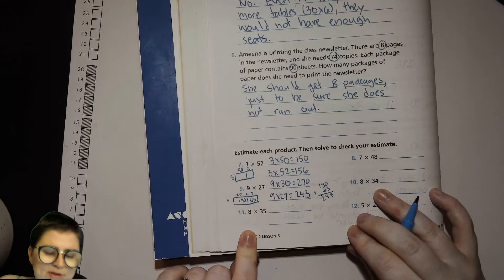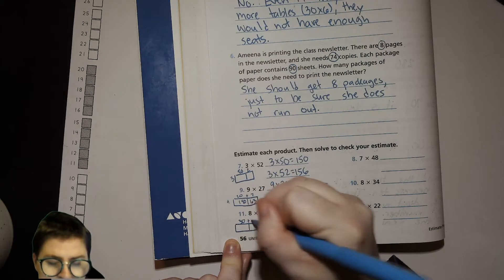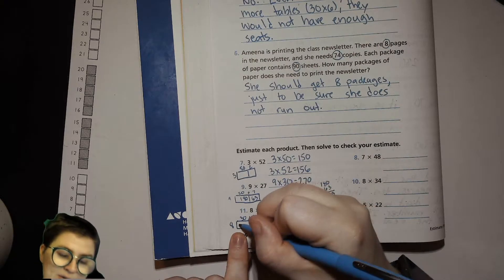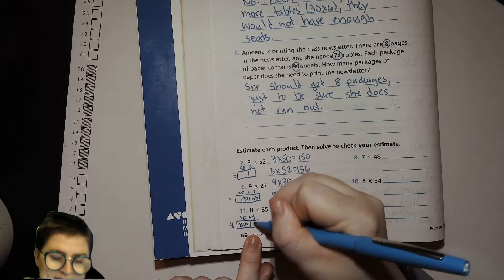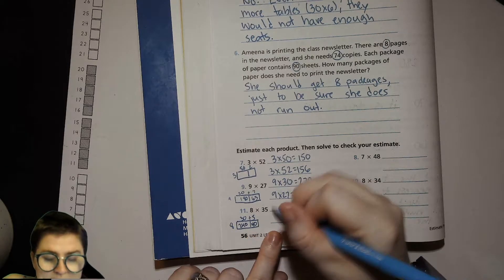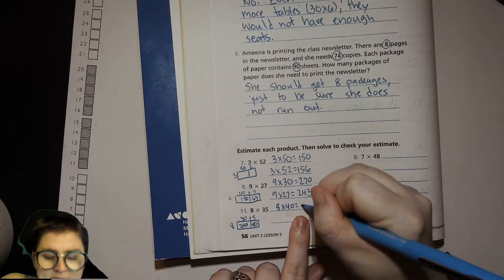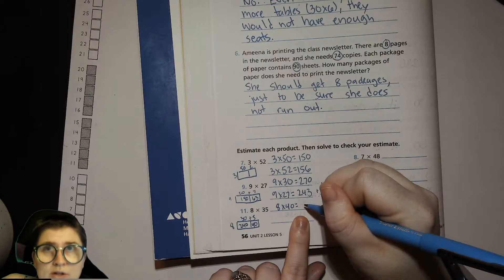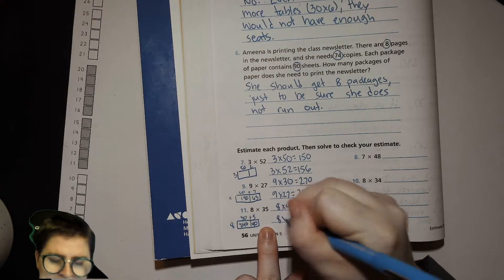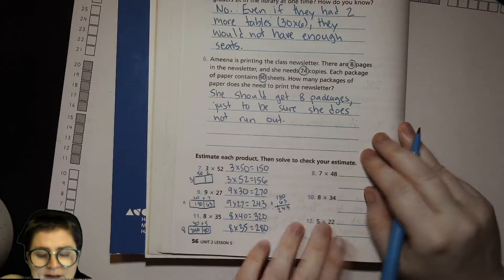8 times 35. So I'll draw my little rectangle here. 30 plus 5, 8. 8 times 3 is 24. So 8 times 30 is 240. 8 times 5 is 40. That's actually kind of easier just to figure it out. But that's okay. So 8 times 40, round that to the nearest 10, would be 320. And then 8 times 35 would be 280. Okay.